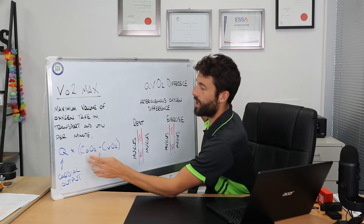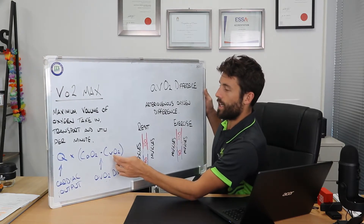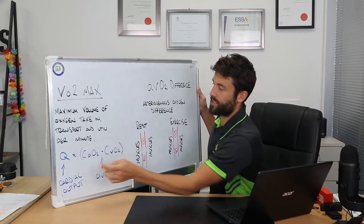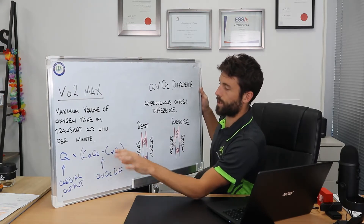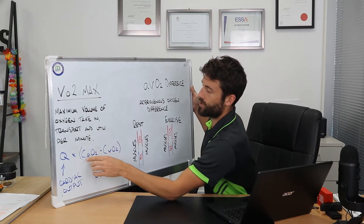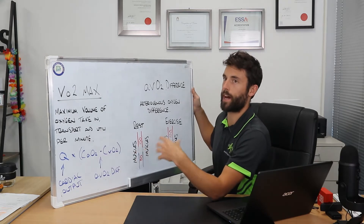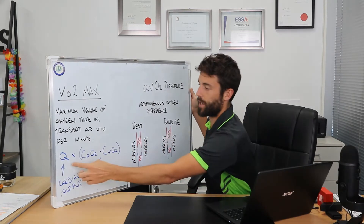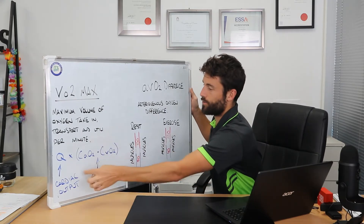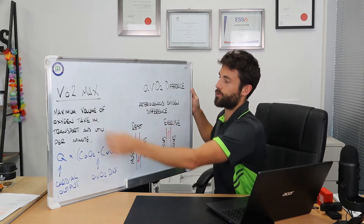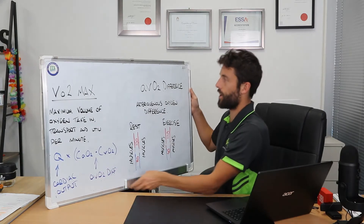If you were to look it up, you might find an equation like this. VO2 max equals Q multiplied by a quantity — that is the oxygen in the arteries minus the oxygen in the veins — so we can work out how much has been diffused at the muscles. Q meaning cardiac output. So this here is actually our a-VO2 difference. To get VO2 max we take cardiac output and multiply by the a-VO2 difference.